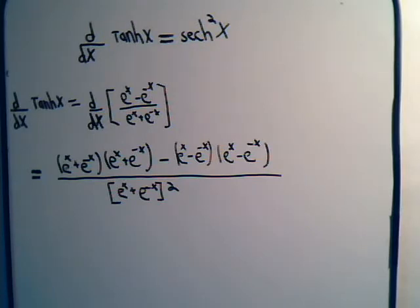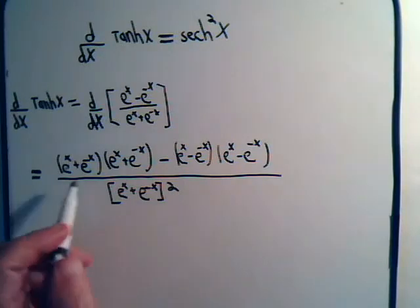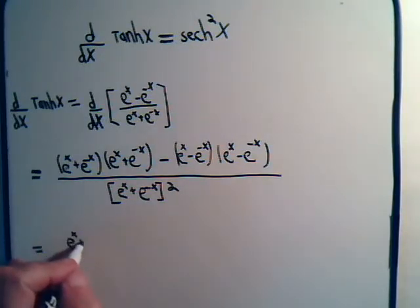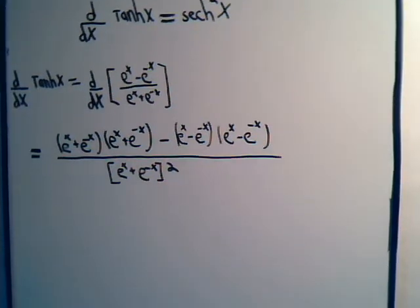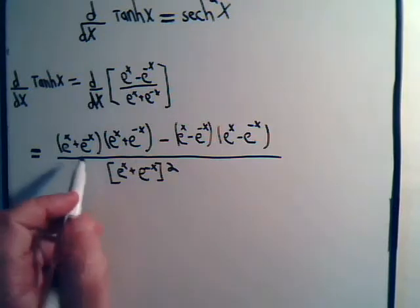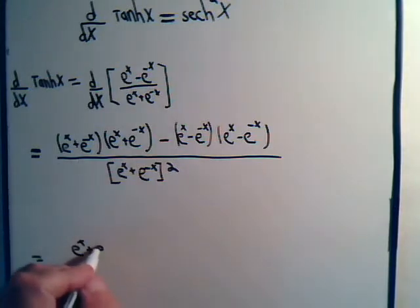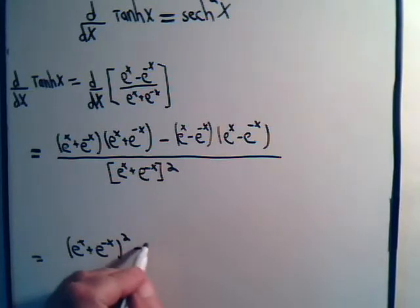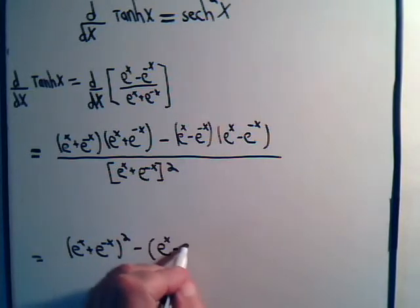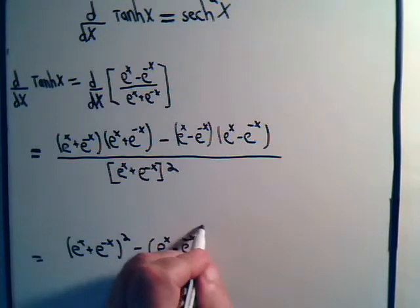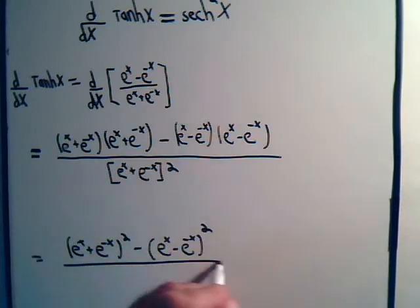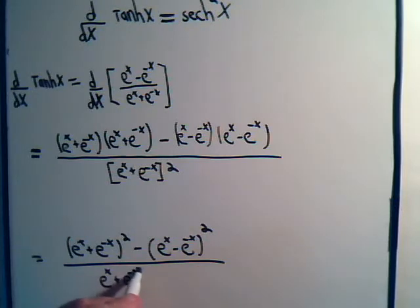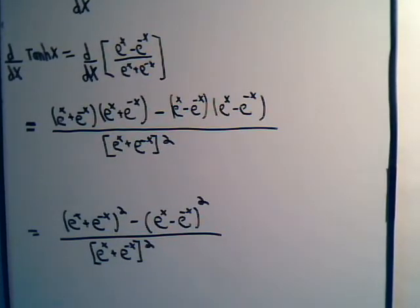Now it looks like we can rewrite the numerator. We can see that it equals e to the x plus e to the minus x, squared, minus e to the x minus e to the minus x, squared. And that whole thing is divided by e to the x plus e to the minus x, squared.